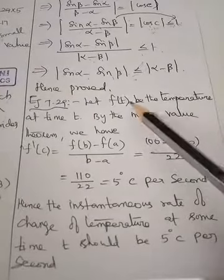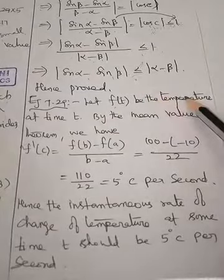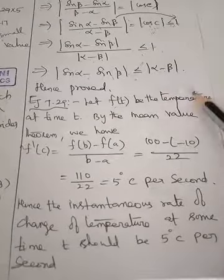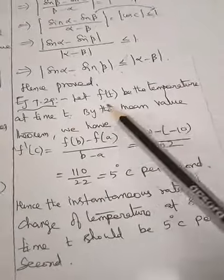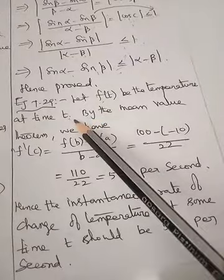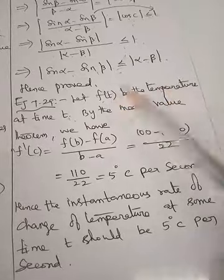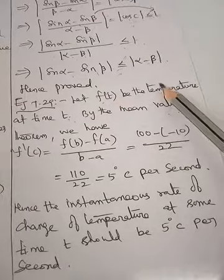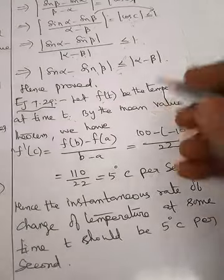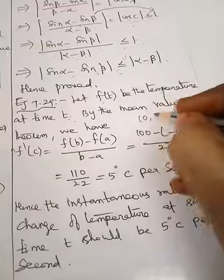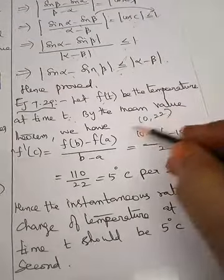If f(t) is the temperature at time t, by the Mean Value Theorem, the interval is [0,22] because it is 22 seconds. Starting at 0, ending at 22 seconds.